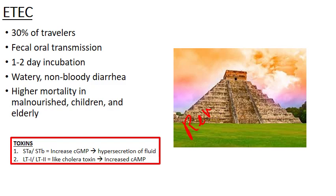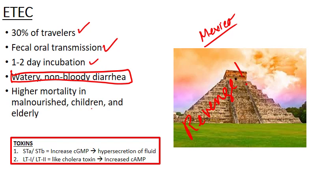ETEC is sometimes referred to as Montezuma's revenge. This infection affects about 30% of travelers each year to areas where this strain of E. coli is endemic — certainly including Mexico and other warm-weather climates. It's acquired through fecal-oral transmission, so contaminated food or water. There's a one to two-day incubation before the patient experiences watery, non-bloody diarrhea — though that's the textbook case.